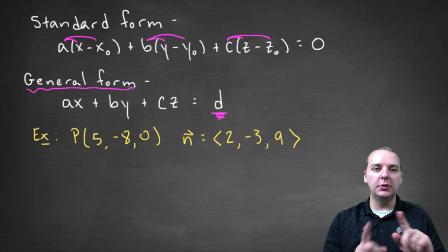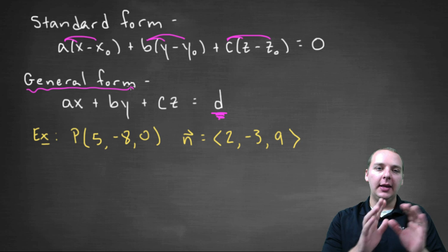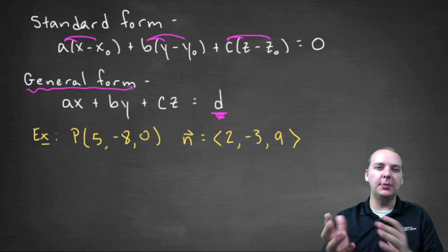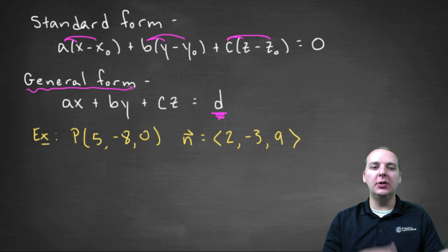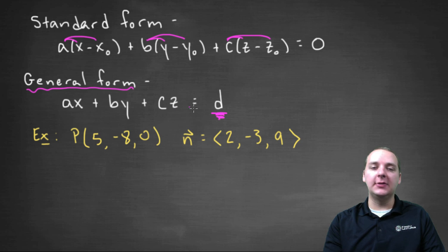So just make sure you know the difference between standard form and general form. General form is nice because it's more condensed. One of the downsides though is yes you can see the normal vector a, b, c, but it's not immediately evident what a point in the plane is unless you find an x, y, and z that satisfies the equation.